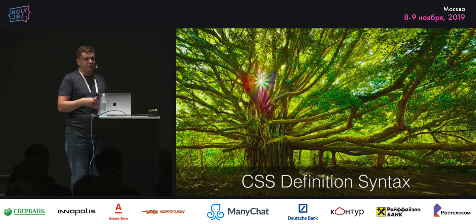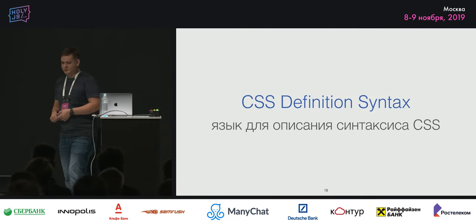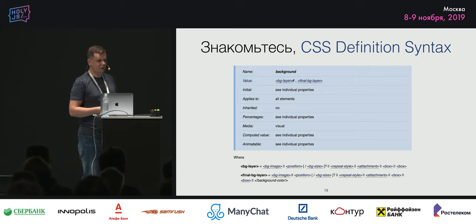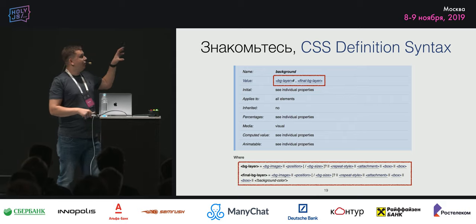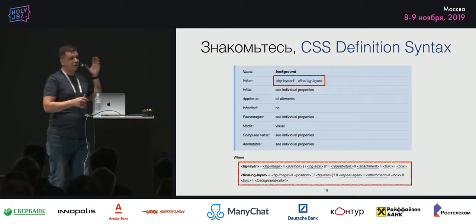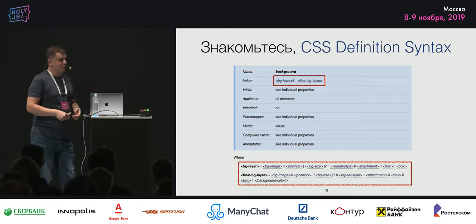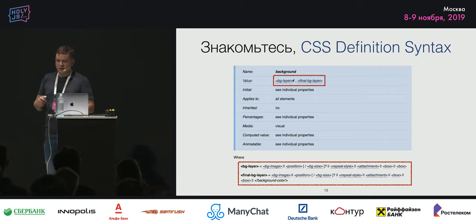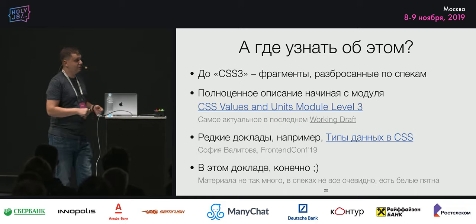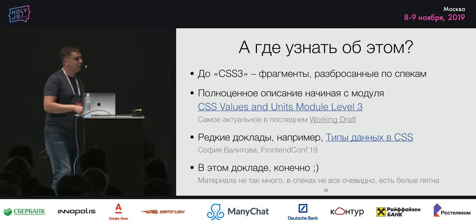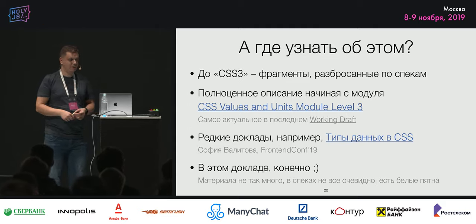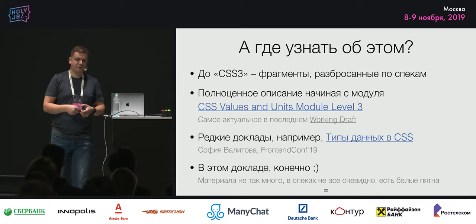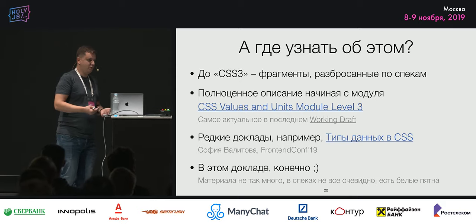Источником правды является как раз тот самый CSS Definition Syntax. Собственно, CSS Definition Syntax — это язык для описания синтаксиса CSS. Если вы откроете любую спеку по CSS практически, там есть таблички описания свойств и есть описание value — там описаны пока, может быть, не совсем знакомые вещи. Это как раз таки и есть CSS Definition Syntax. До CSS3 это было размазано по разным частям спеки, а потом появился модуль CSS Values and Units, и там этот синтаксис описан в деталях — это источник правды.